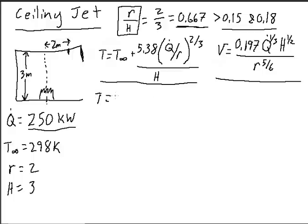So we can find temperature equals ambient temperature, 298, plus 5.35. Once again, this is an empirical constant, so it's important that we use the right units. If you're going to use different units, other than kilowatts and meters for the heat release rate and the radius, you can do that, but you'll need a different empirical constant.